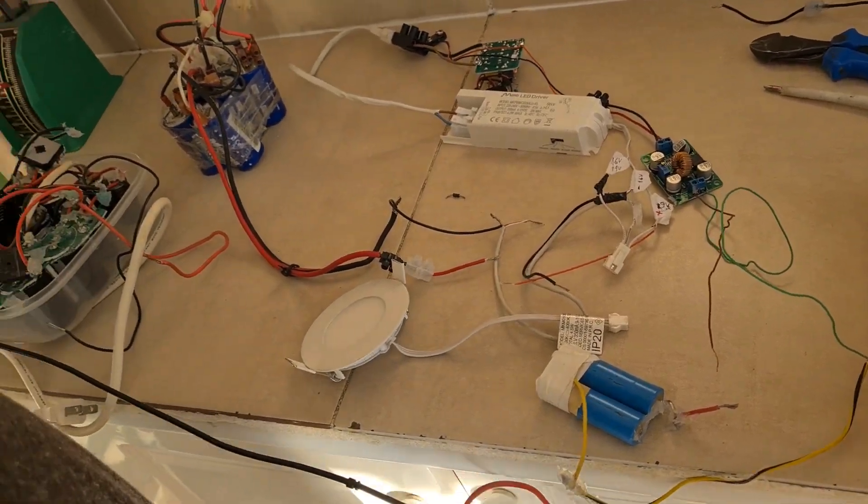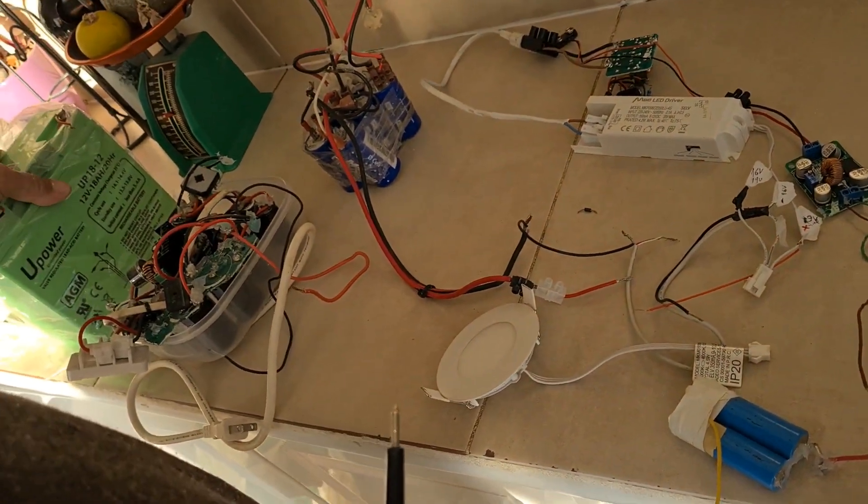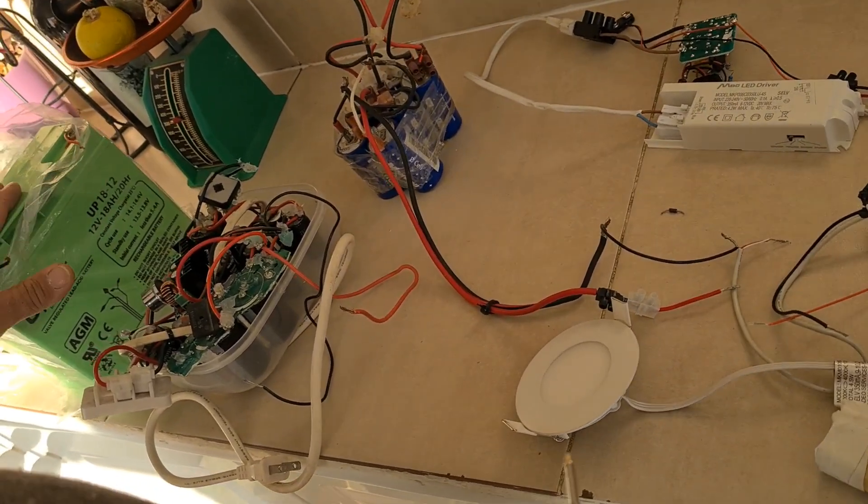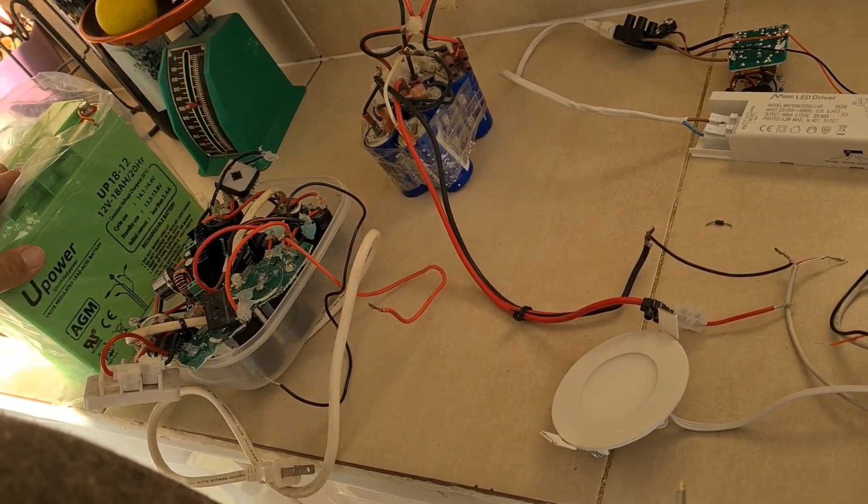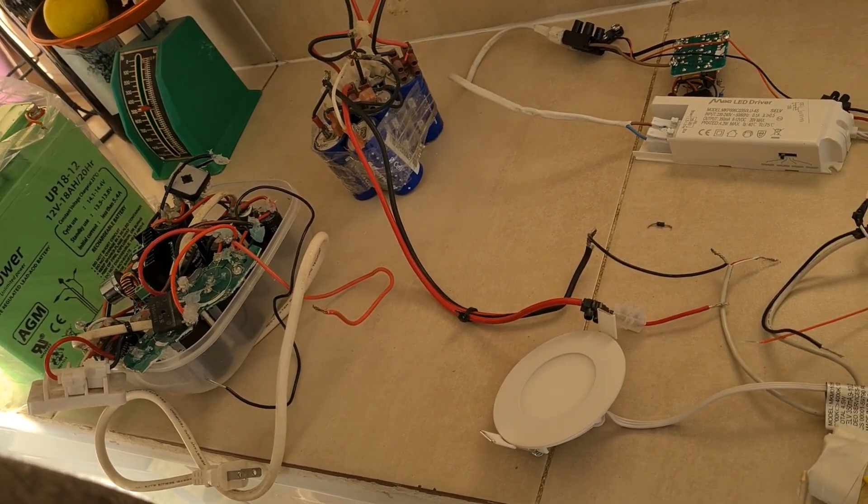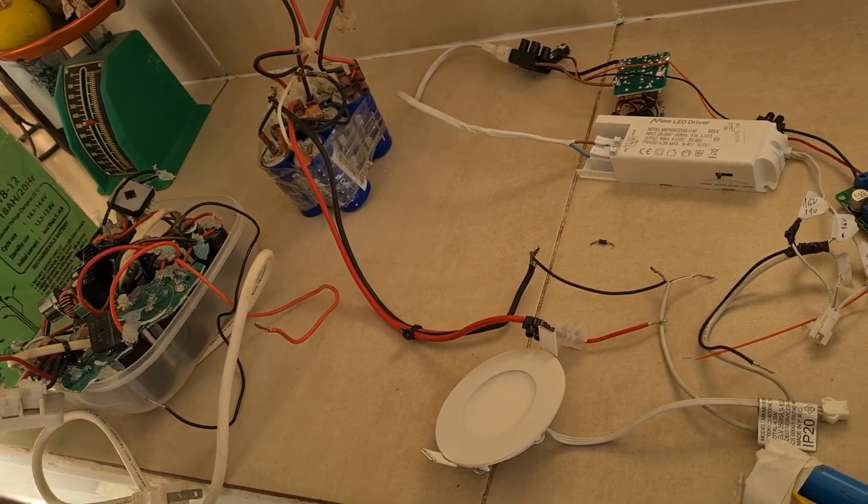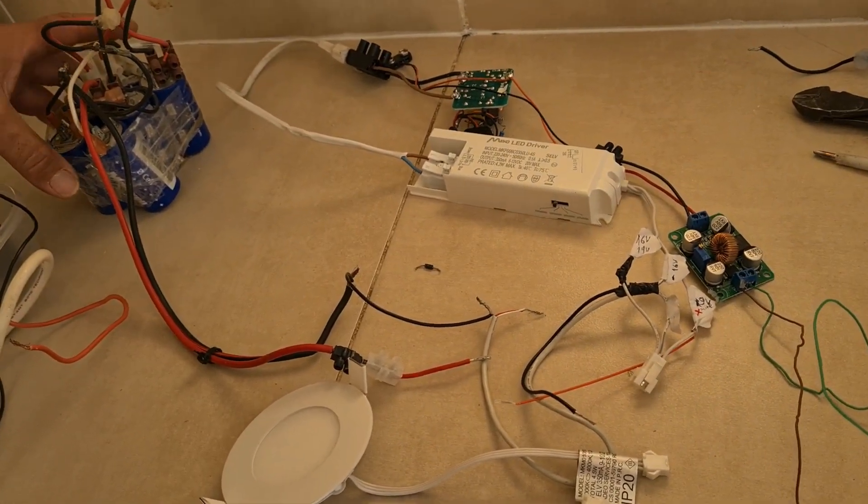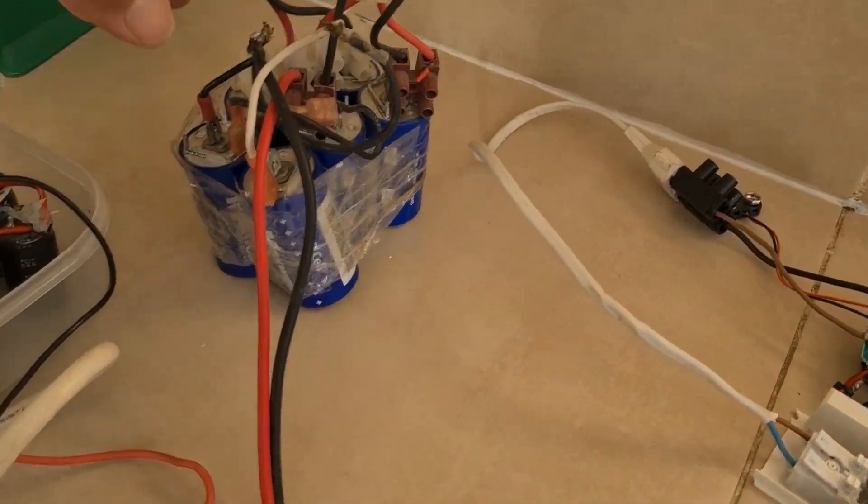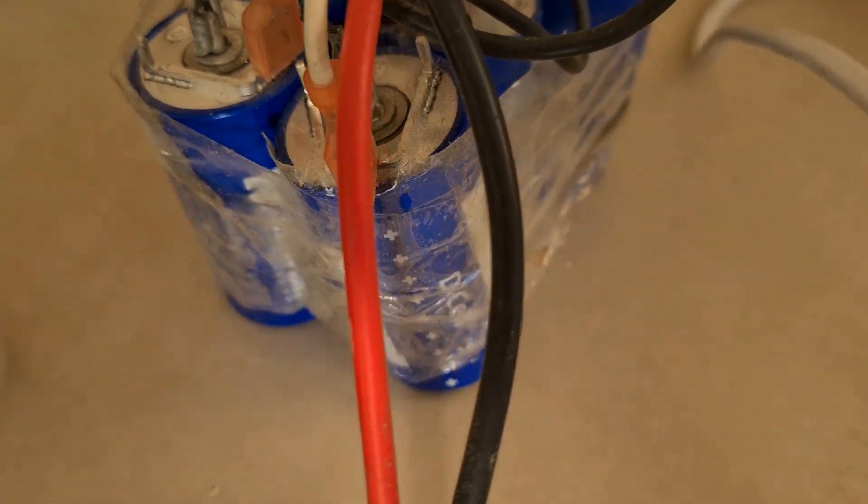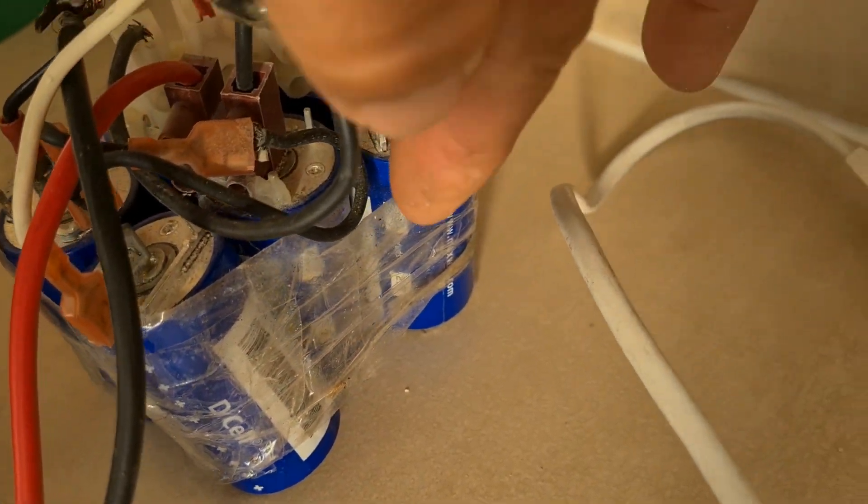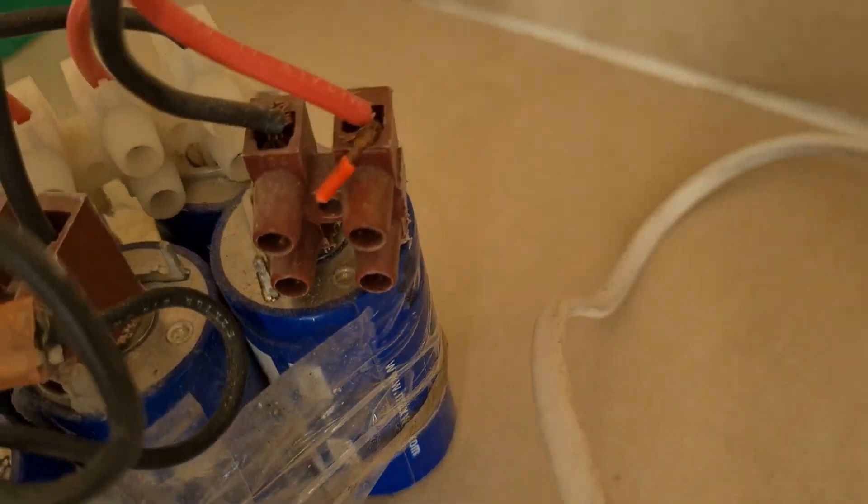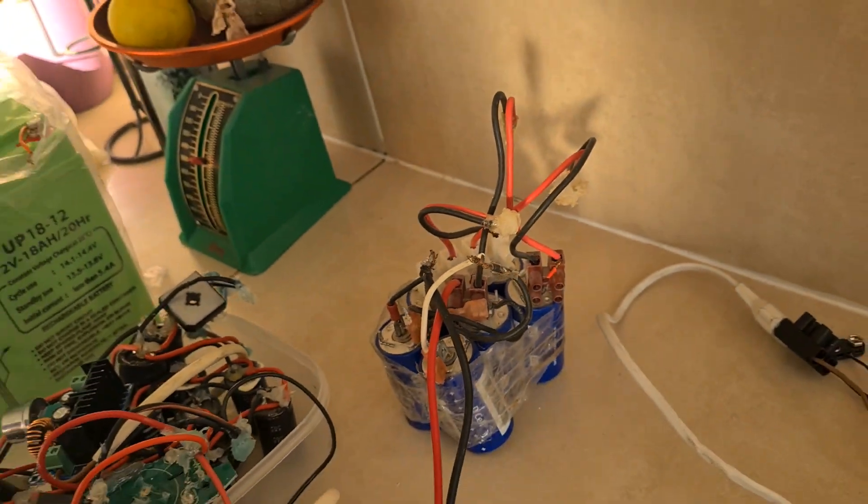Hi, in our last video we charged this 18 ampere hour battery. You can see it in the video. I was asked to try to charge a super capacitor bank. This is a Max capacitor, 2.7 volts, 350 farad DC. Let's see if we can charge it from our system.